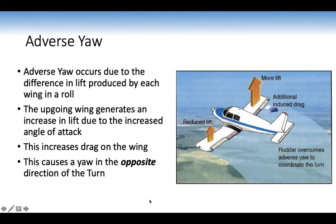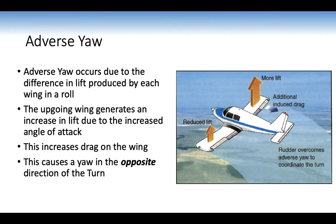Adverse yaw occurs due to the difference in lift produced by each wing during a roll. The up-going wing generates increased lift due to higher angle of attack, causing increased induced drag. Rolling left, one aileron goes up and the other goes down. Due to that drag, the aeroplane yaws in the opposite direction of the turn. That's why we do bank, balance, back pressure — applying a bit of rudder to overcome adverse yaw.